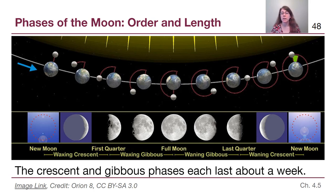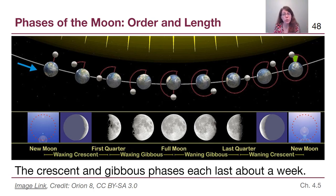All of the time in between has to be filled up with a more generalized statement. For our calendar, the rest of the year is broken up into four seasons — summer, fall, winter, spring. For the moon phases, the rest of that month is broken up into four descriptions: waxing crescent, waxing gibbous, waning gibbous, and waning crescent. And each of those lasts about a week.